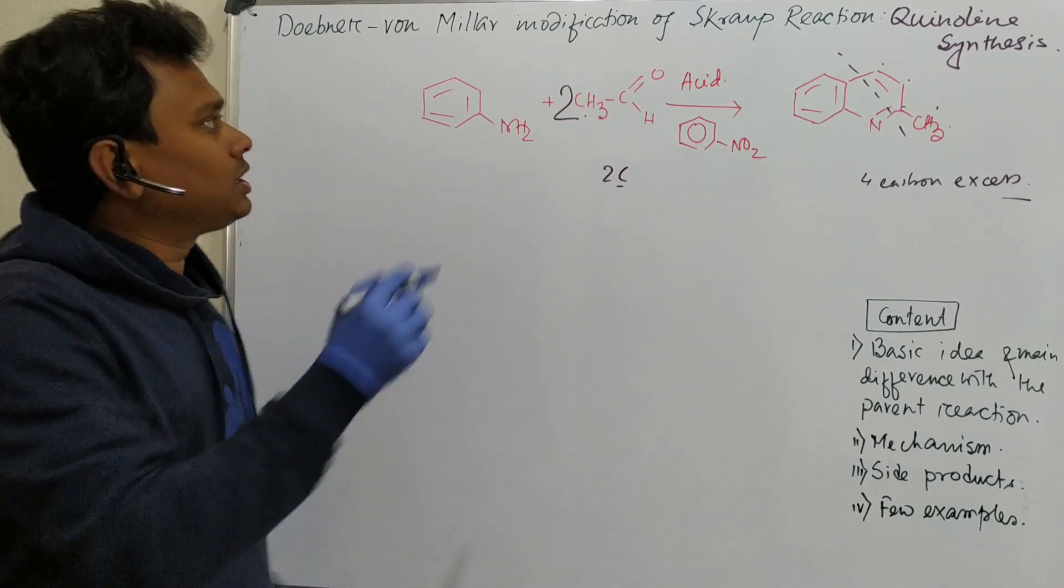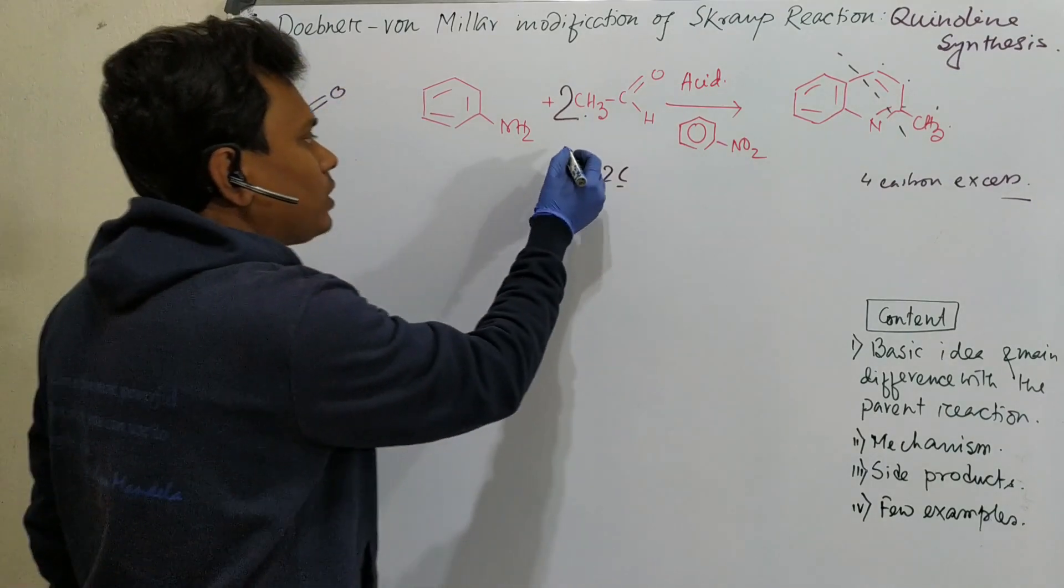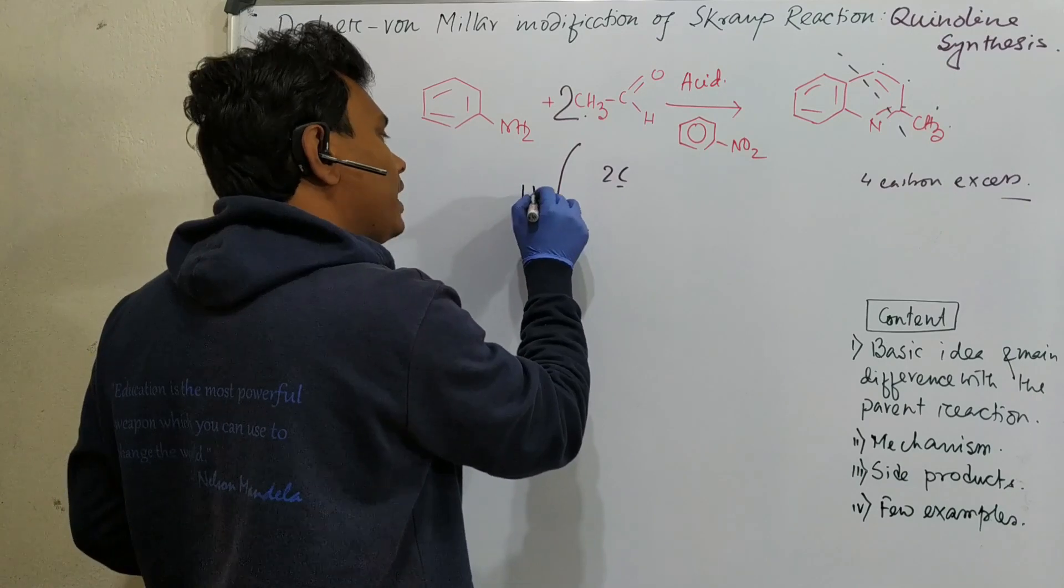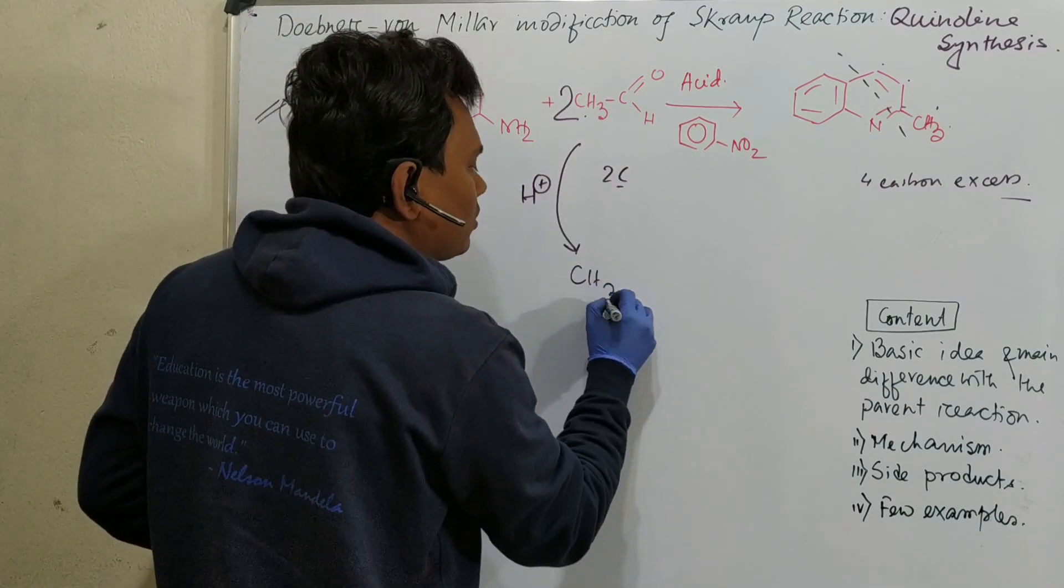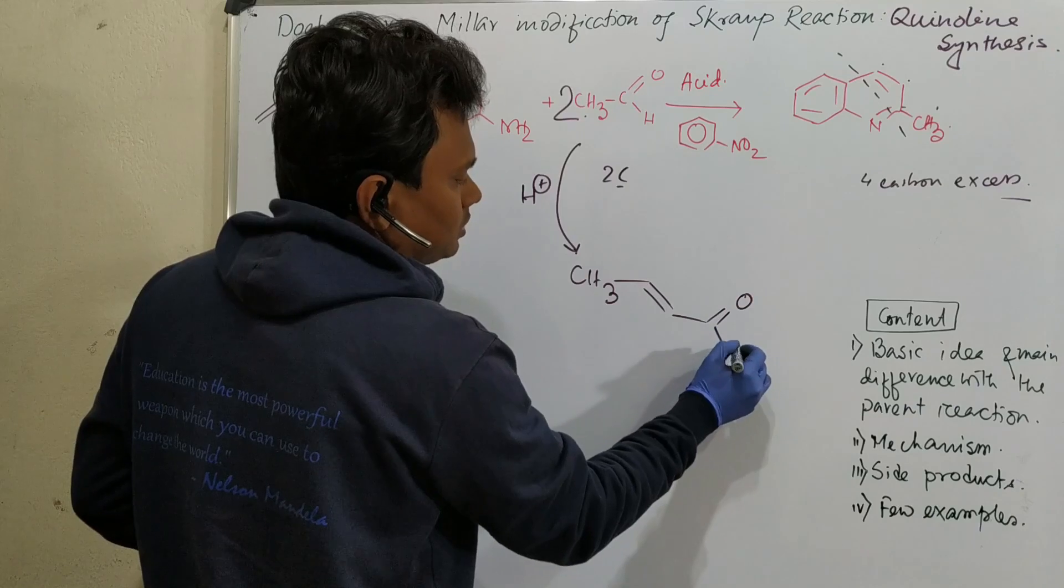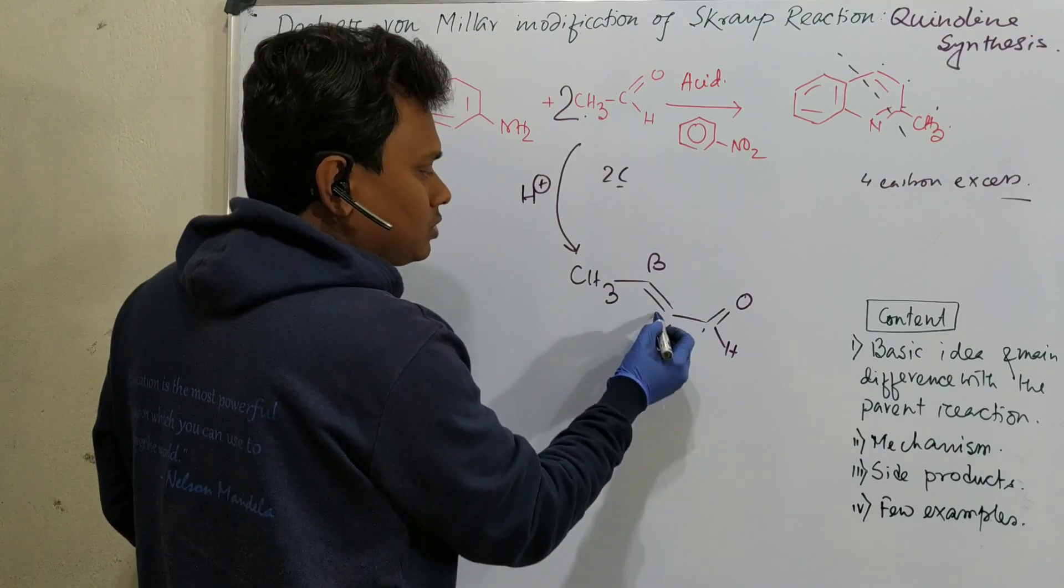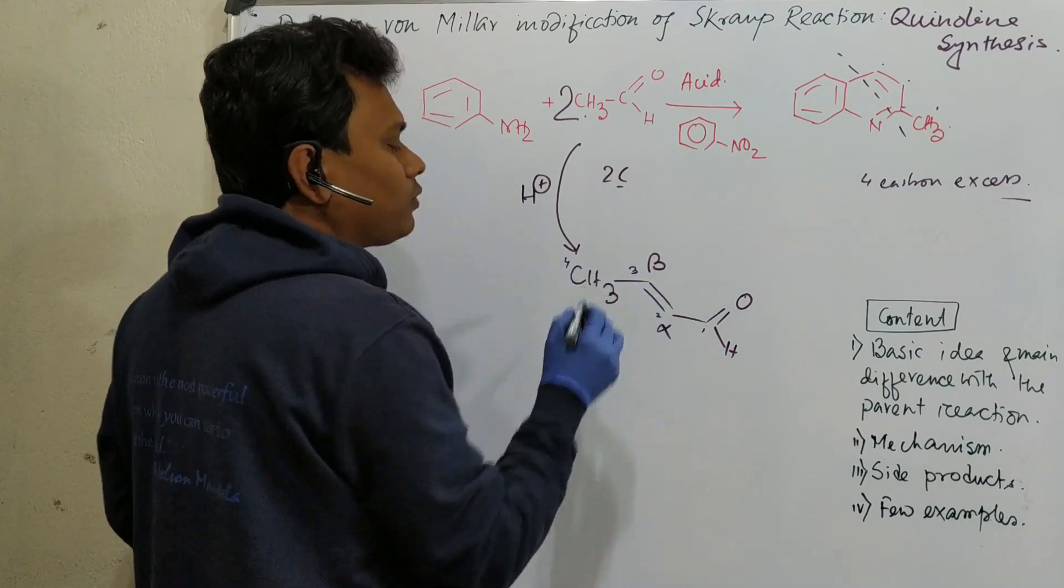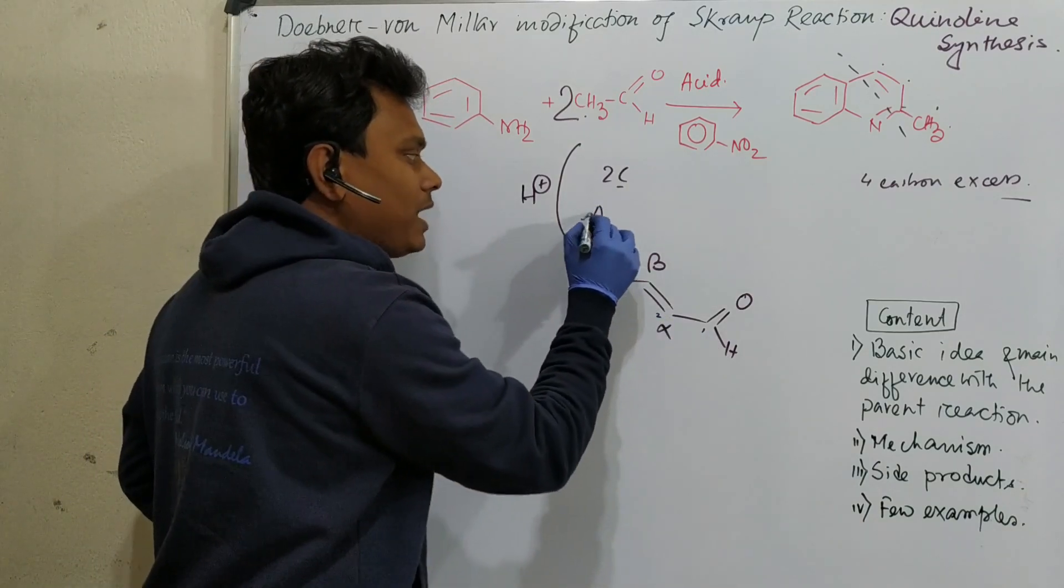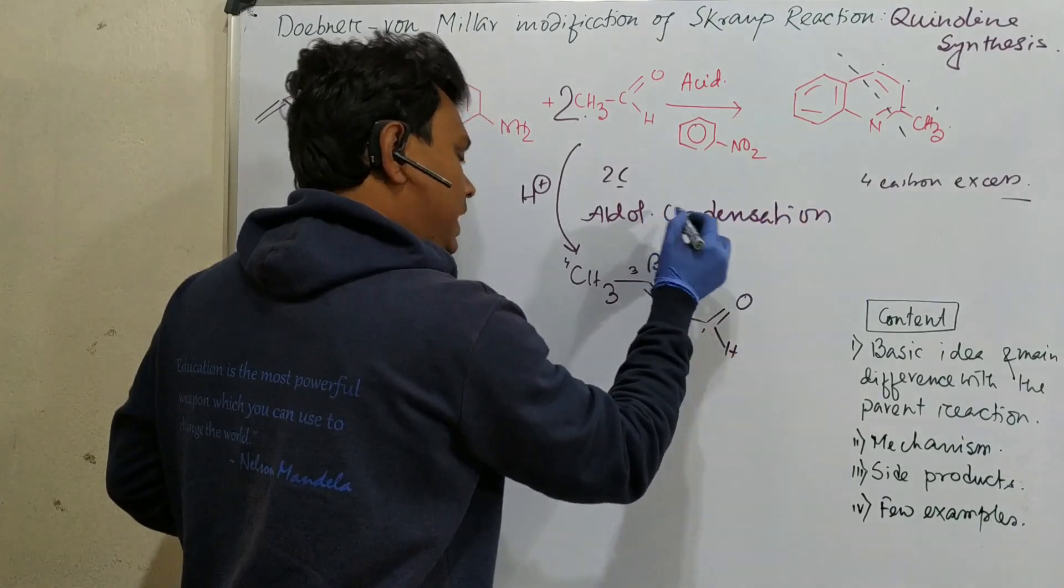Just remember the Skraup reaction used this alpha beta unsaturated ketone. So similarly what happens? This molecule in presence of acid like you can consider sulfuric acid or hydrochloric acid, it undergoes aldol condensation to convert into this alpha beta unsaturated aldehyde. Now count the carbon number. One, two, three, four. It's a four carbon. So similarity is this. So we are taking a derivative. We are preparing this by aldol condensation and dehydration.